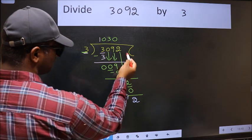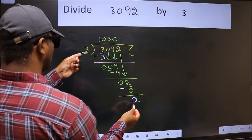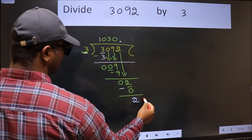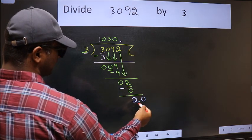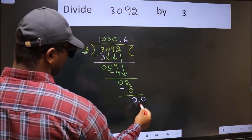Over here, we did not bring any number down, and 2 is smaller than 3. So now we can put dot and take 0, so 20. A number close to 20 in the 3 table is 3, 6, 18.